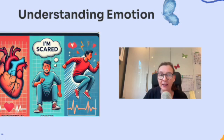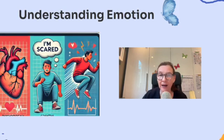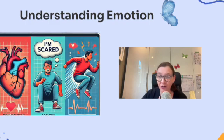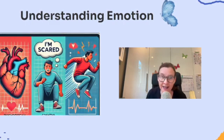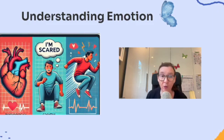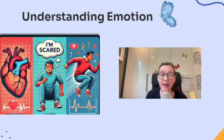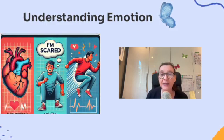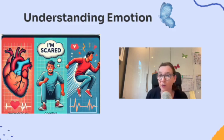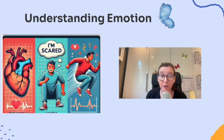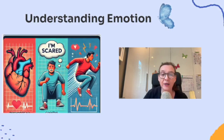Let's break it down with an example. Imagine you hear a loud noise in a dark alley. Your heart races — that's the physiological arousal. You think 'I'm in danger' — that's the cognitive appraisal. And then you jump back or run away — that's the behavioral response. Together, these make up the emotion we call fear. Emotions are essential because they influence everything we do, from making decisions to building relationships. They also help us respond to threats, challenges, and opportunities in our environment.